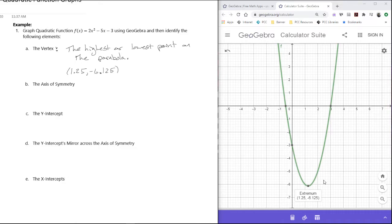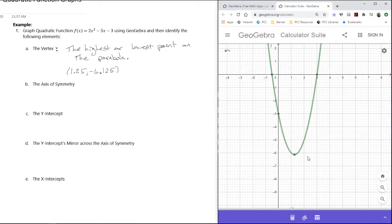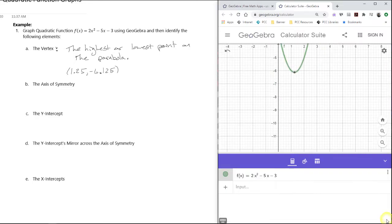The axis of symmetry, I'm going to actually graph it. It's the vertical line that goes through the vertex. So I'm going to write x = 1.25. The 1.25 I am getting from the x-value of the vertex. Right here, that is the axis of symmetry: x = 1.25.